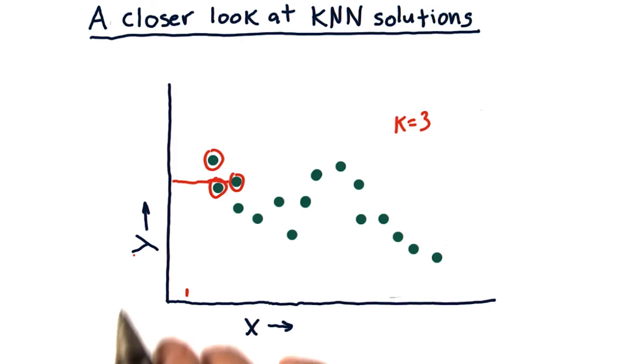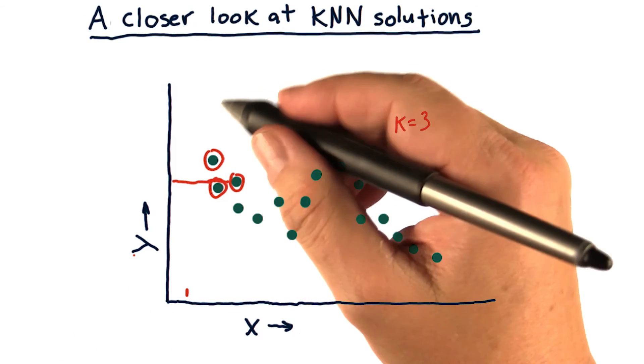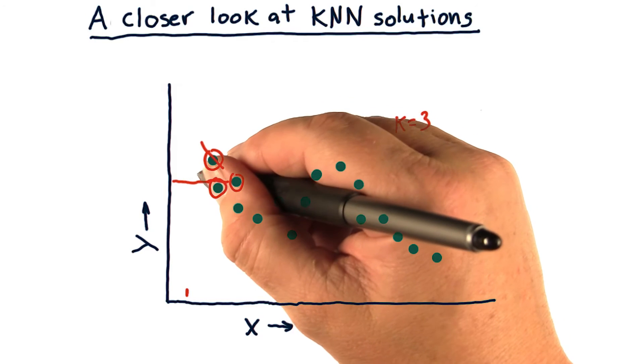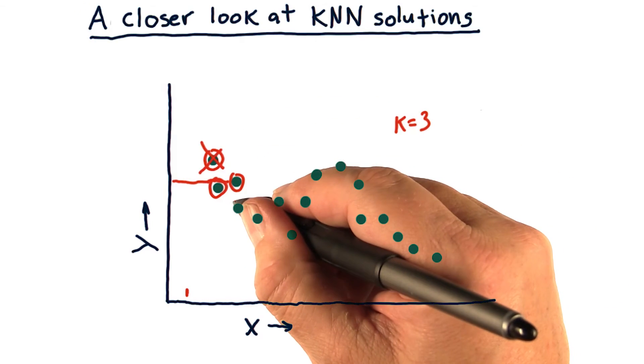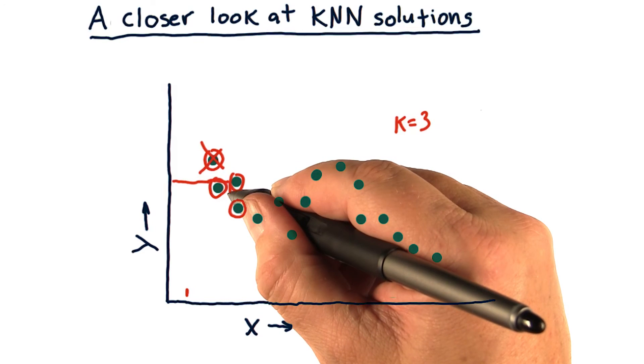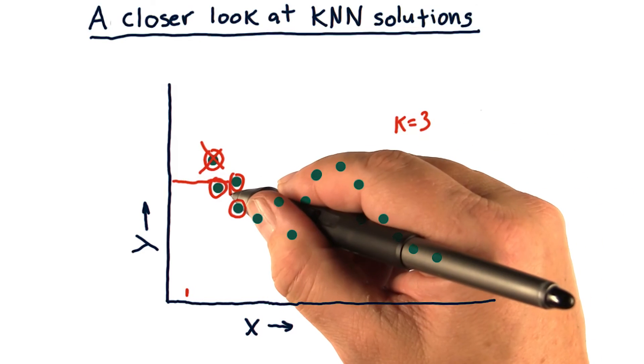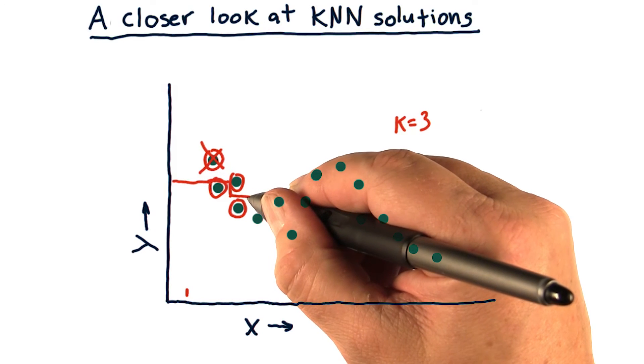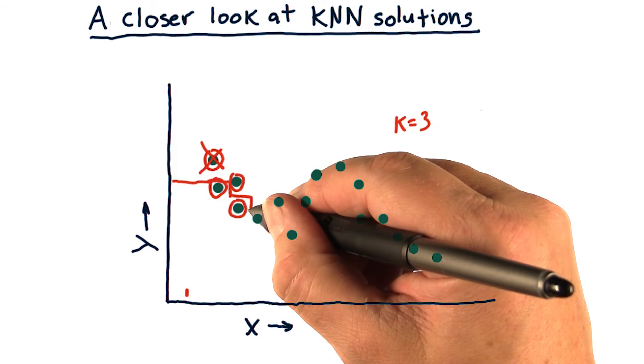Eventually, as we query from left to right, we get to a point where this one gets dropped out and this one gets added in. And at that point, we'll have a sudden drop about like that in the model. And we continue on like this, we'll have another drop like that.